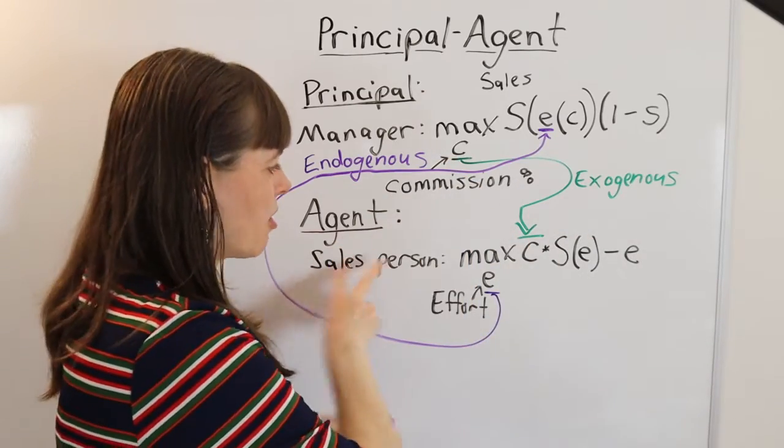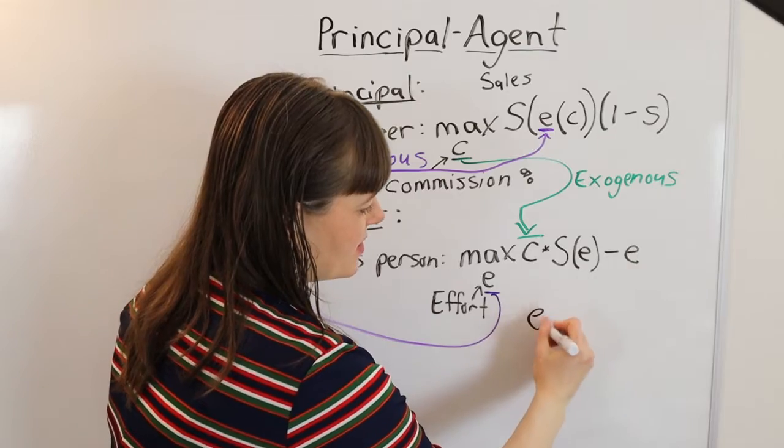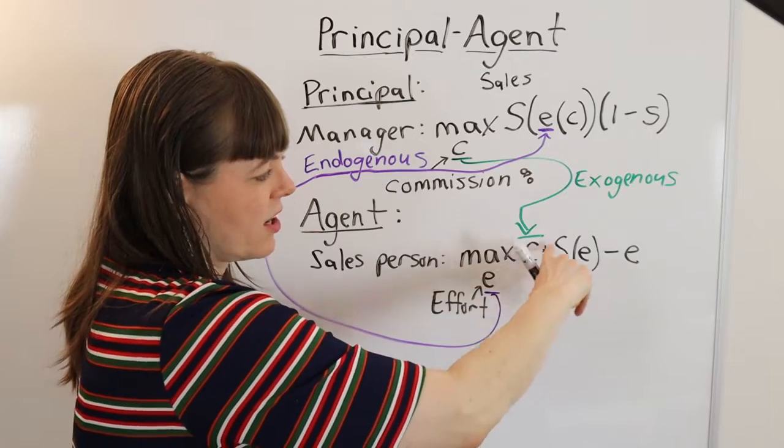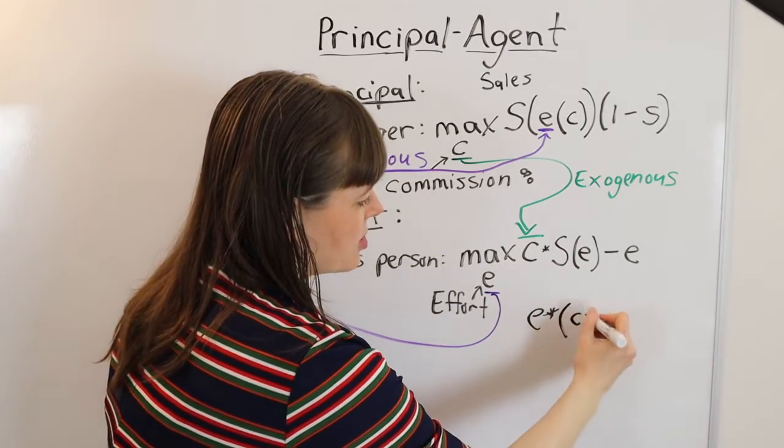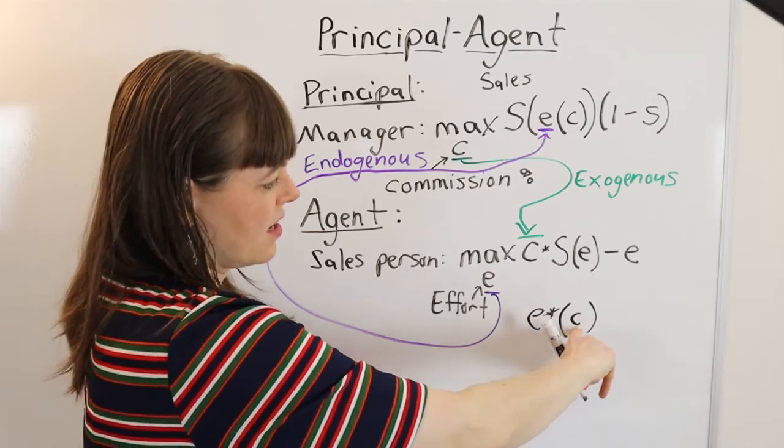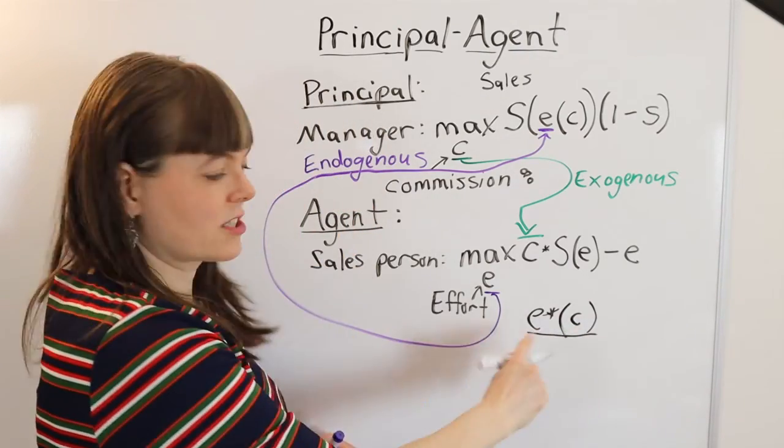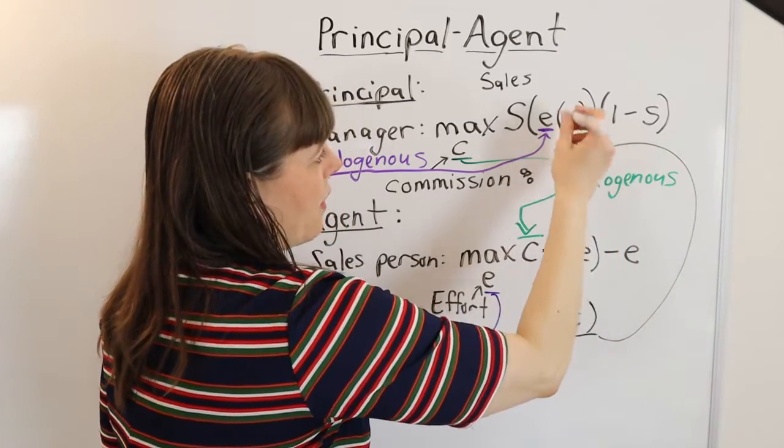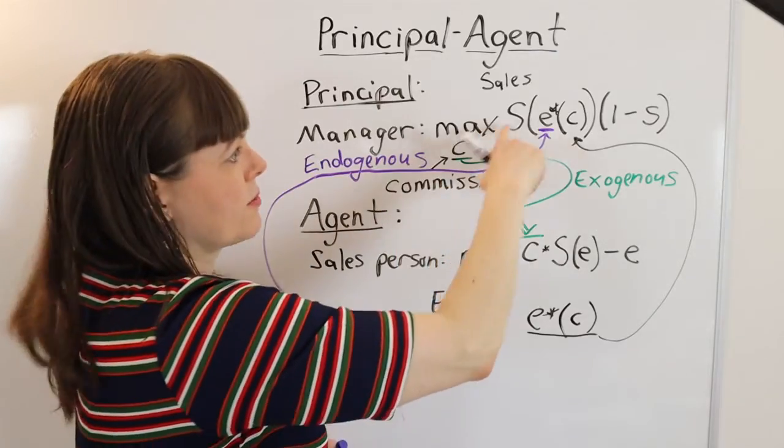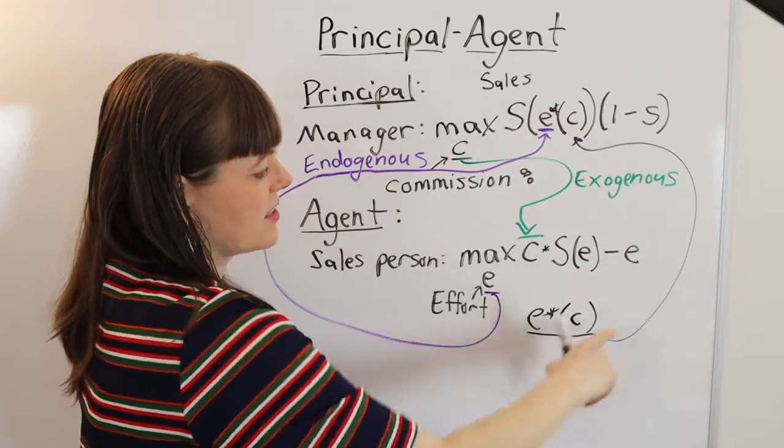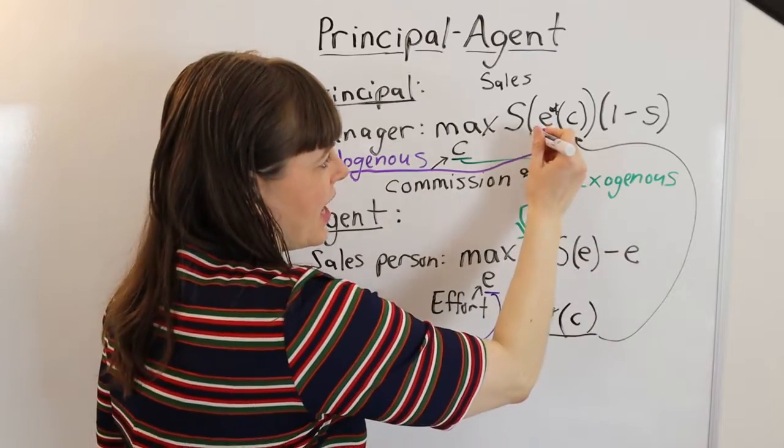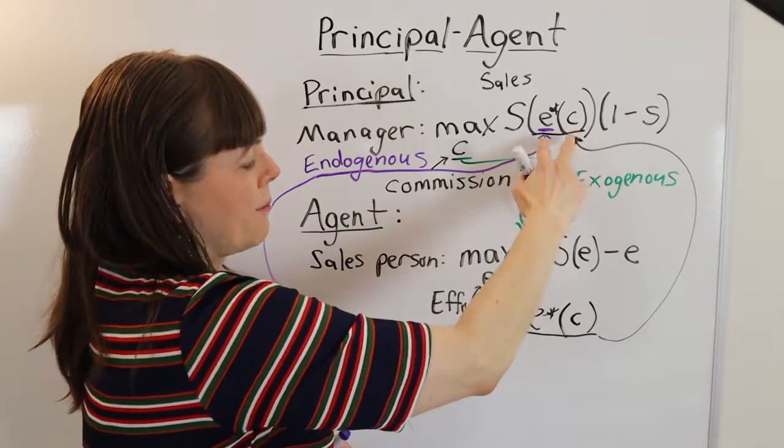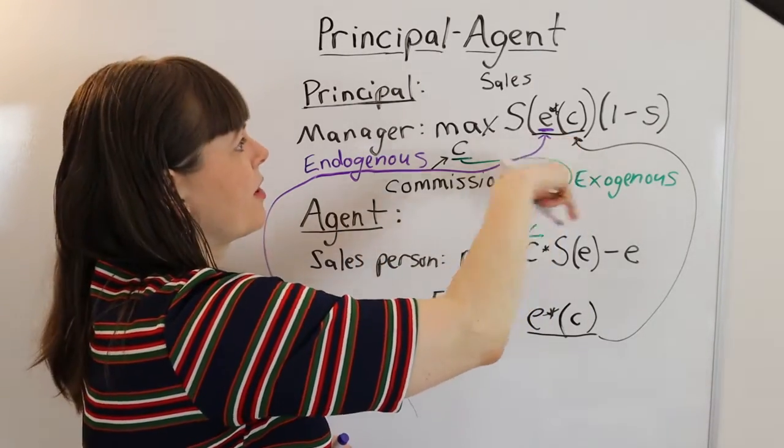So what we find is when we solve the agent's model, the optimal choice E star, that optimal amount of effort for them to put in, is always a function of all of the exogenous variables in the model, which in this case is just their commission percent. And this solution to the agent's model, this thing that appears up here in the manager's objective function, E star C is the solution to this model, that exact function appears up here. And this is why the choice variable for the agent appears as an endogenous variable in the principal's problem.